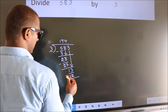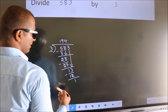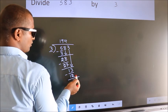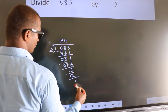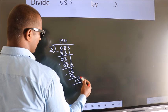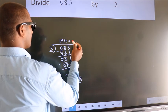Now we subtract, we get 1. No more numbers to bring down, so we stop here. This is our remainder. This is our quotient.